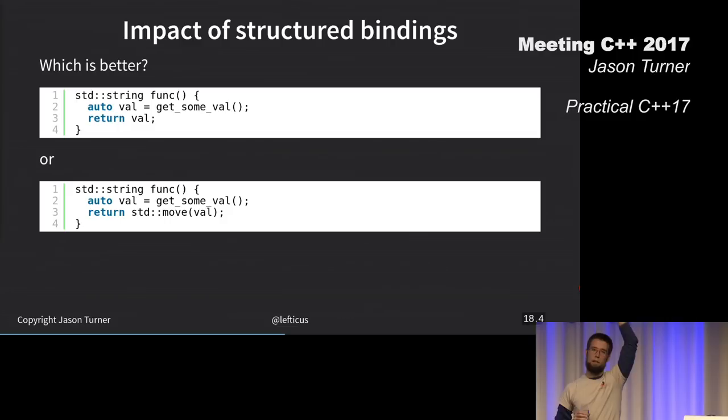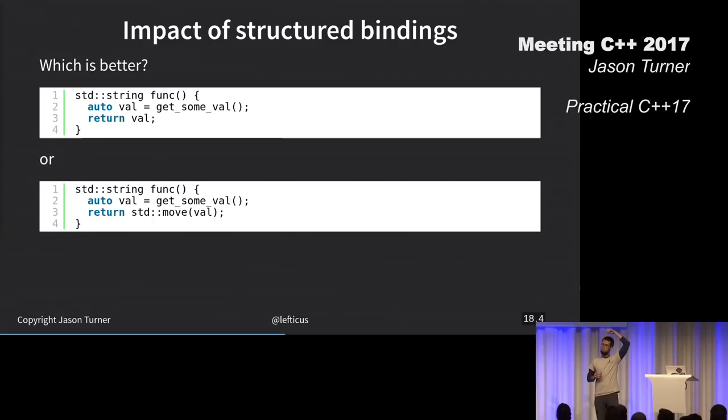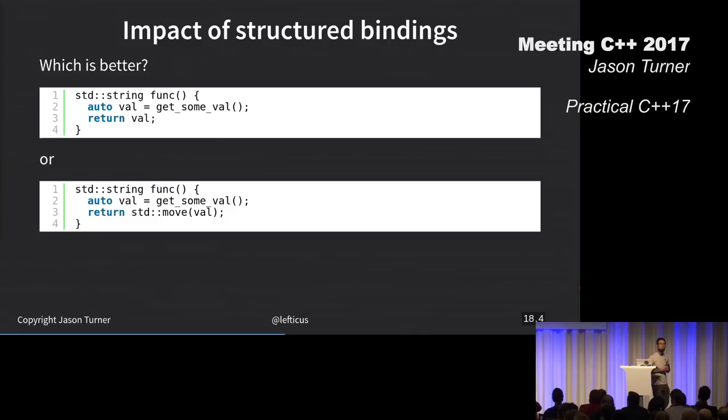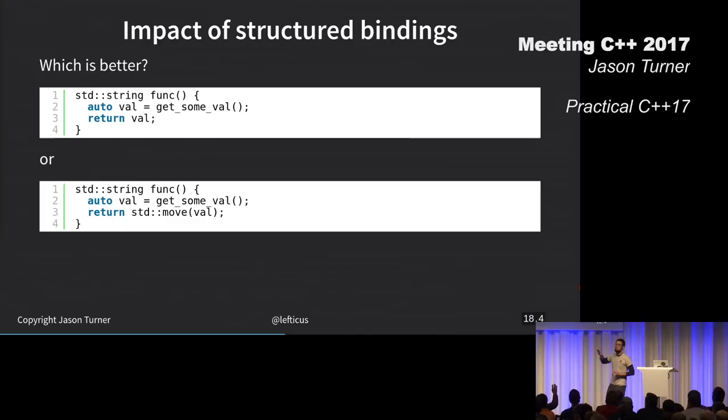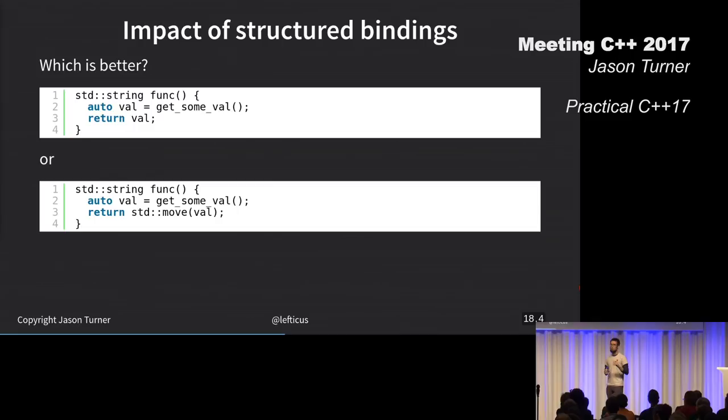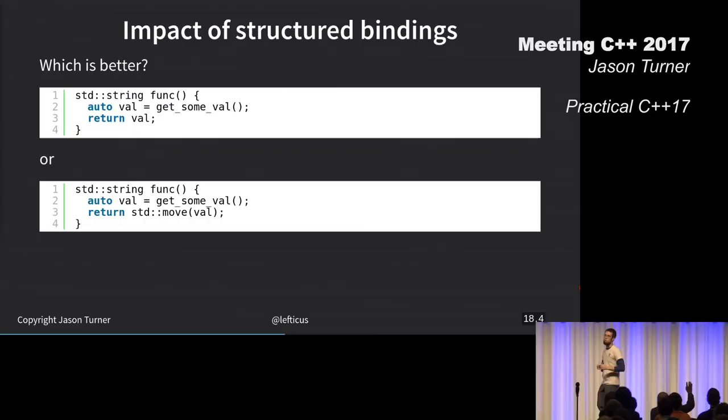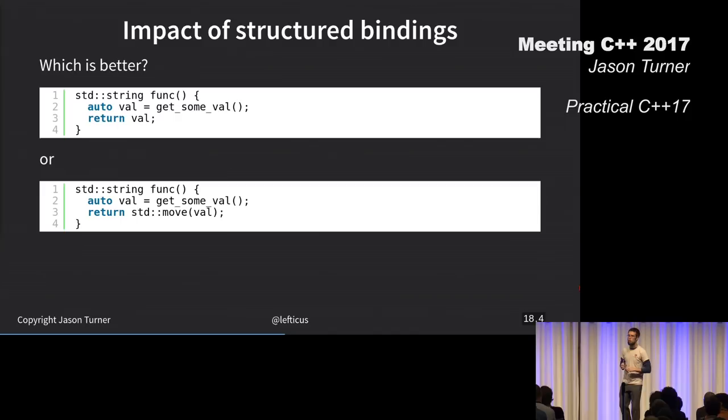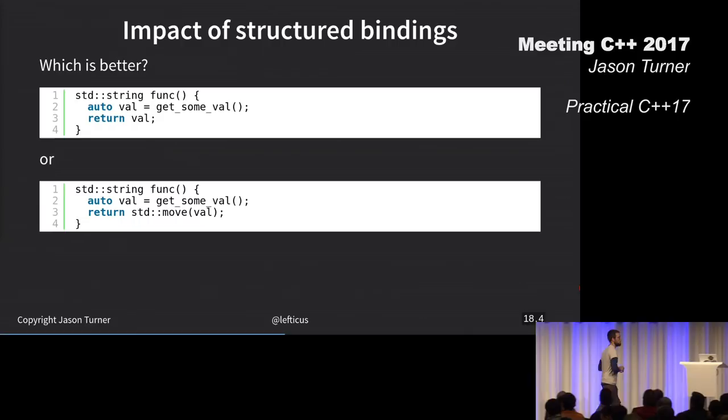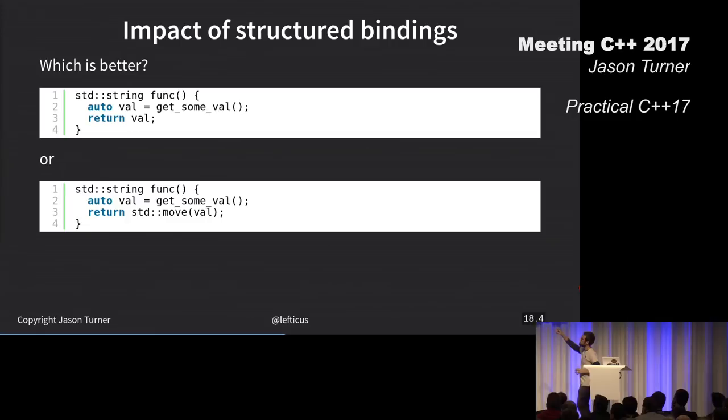Let's start with anyone saying which one's better. We have to assume that there's something more complicated going on here for the sake of this example. It's the same because return values are automatically moved when we are returning by value. RVO cannot be used in the second. That is the answer I'm looking for.